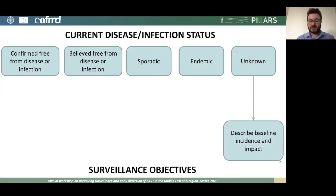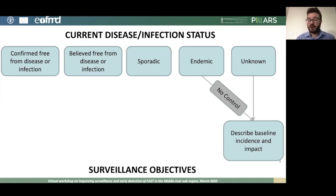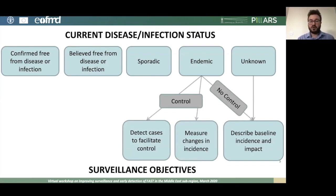If the disease status is unknown, your surveillance objective might be to describe the baseline incidence and impact. If you're endemic with no control measures, your objective might be the same — to describe the baseline incidence and impact. However, if you are controlling the disease, you have different objectives: you might measure any changes in the incidence to show that control is working, and you may also want to detect cases of disease to facilitate control and respond to outbreaks to reduce their impact.